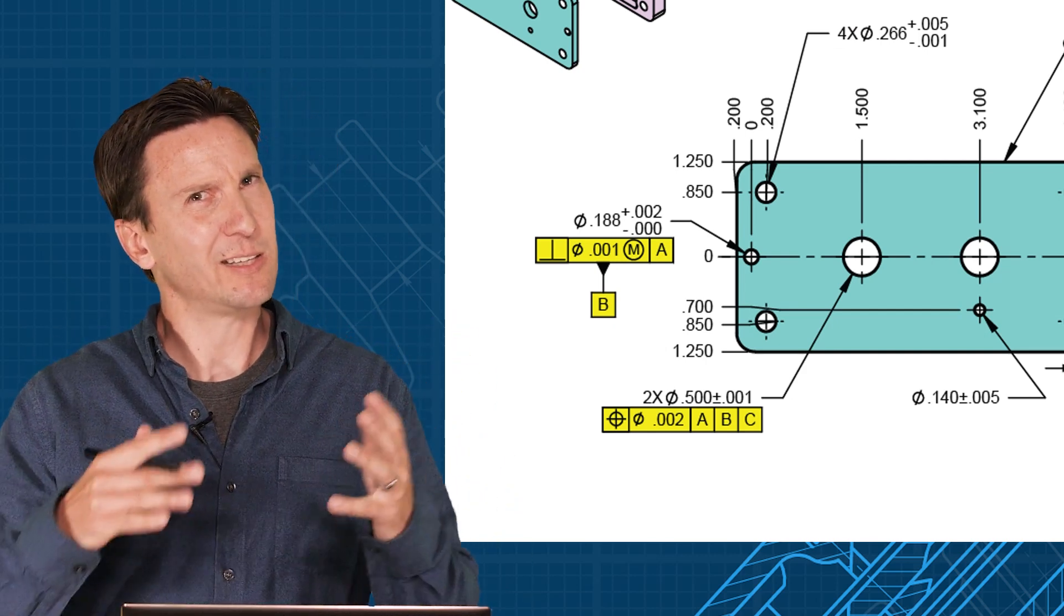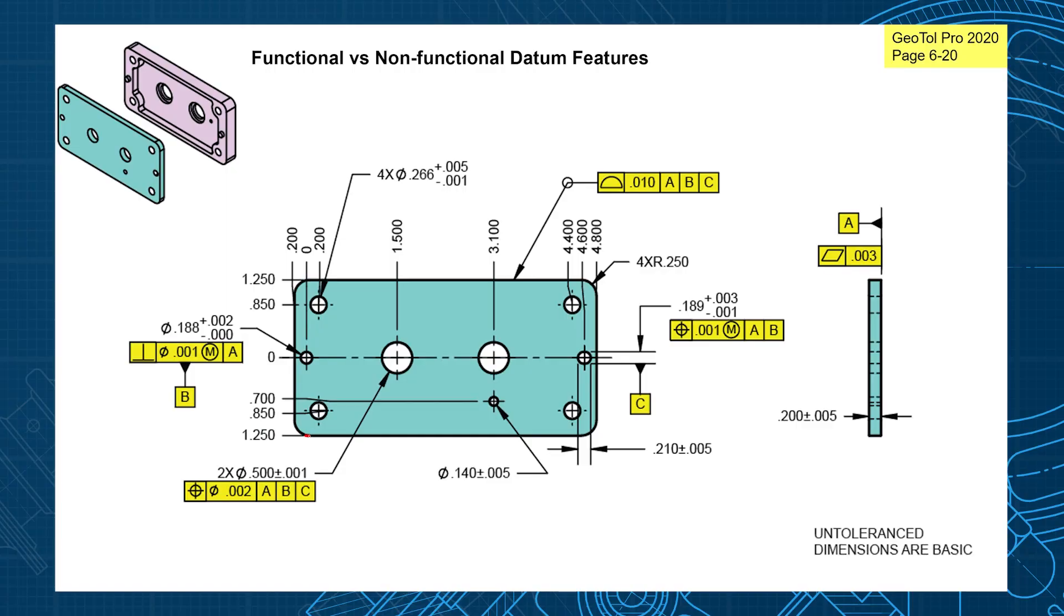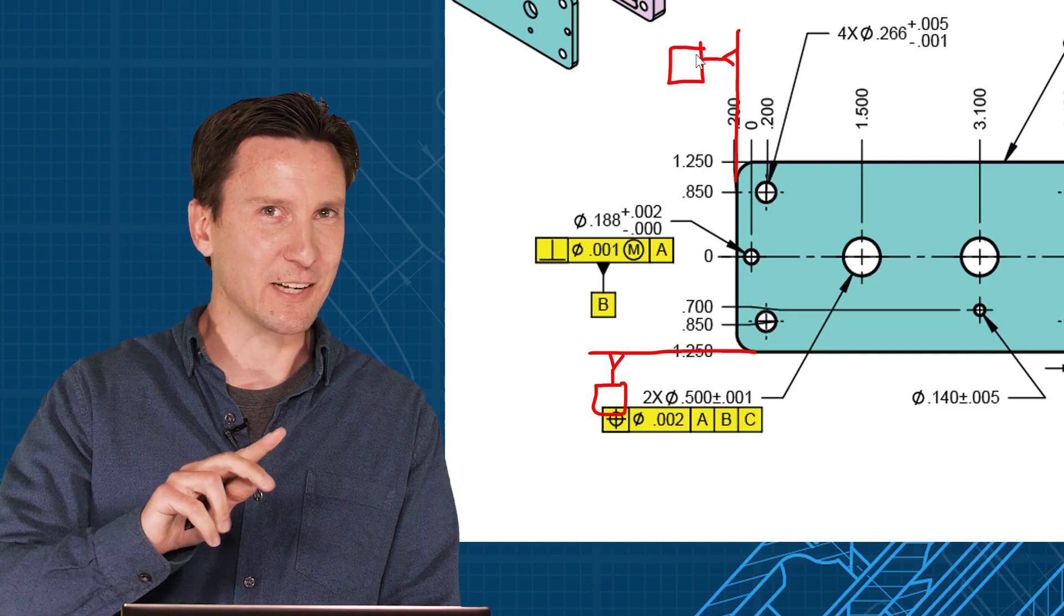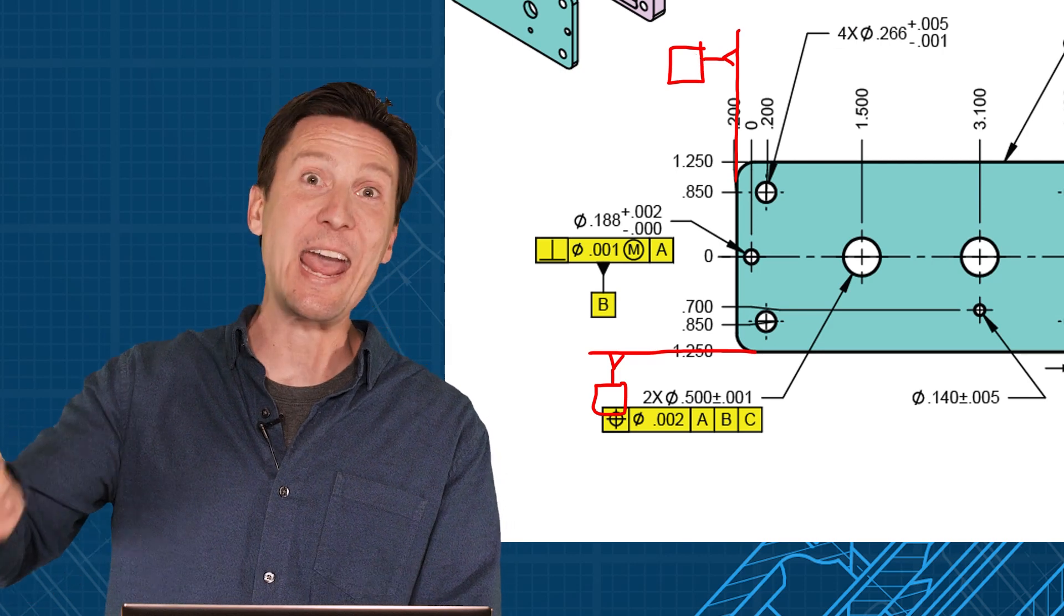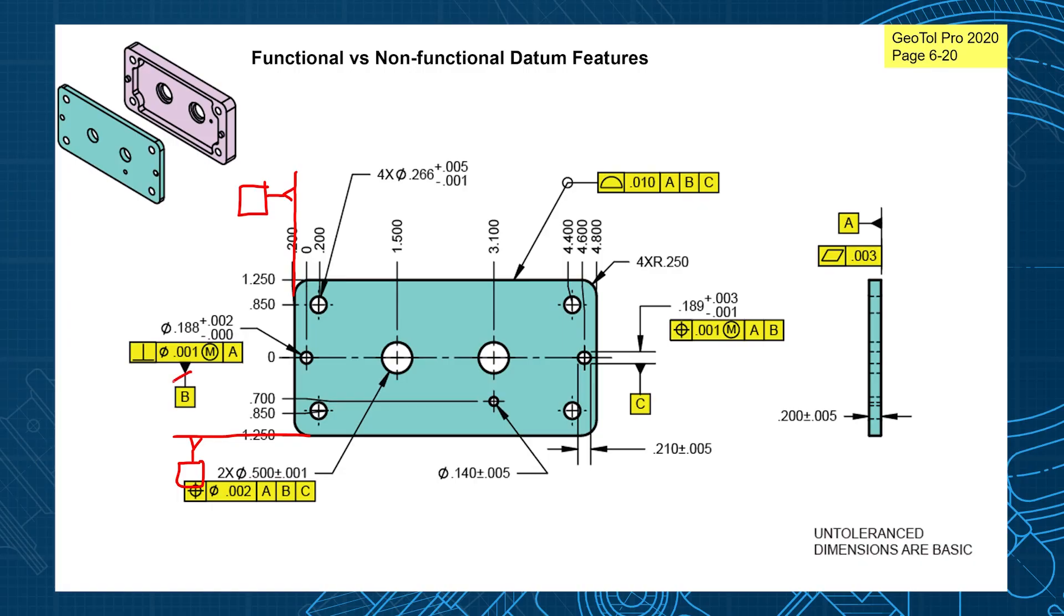Now a lot of people say yeah but manufacturing would rather have it if the datums were this bottom corner because we're going to manufacture it off that. So I really want this to be the datum feature and I want this to be the datum feature to help out manufacturing. Well let me show you why that actually does the opposite. It hurts manufacturing and it hurts your assembly by causing a stack-up issue.